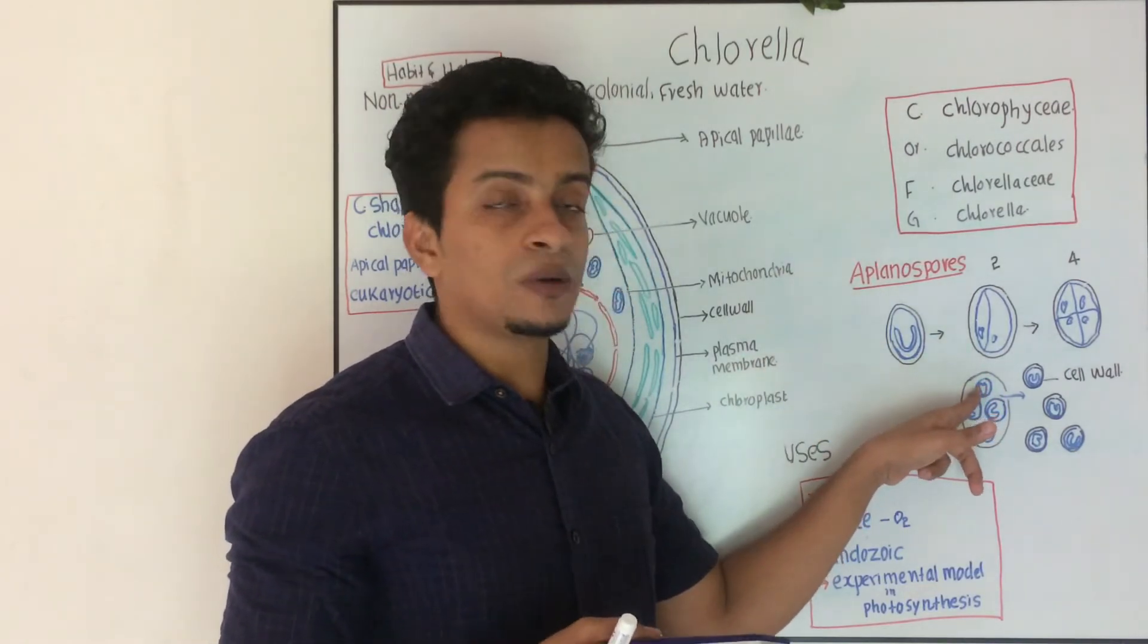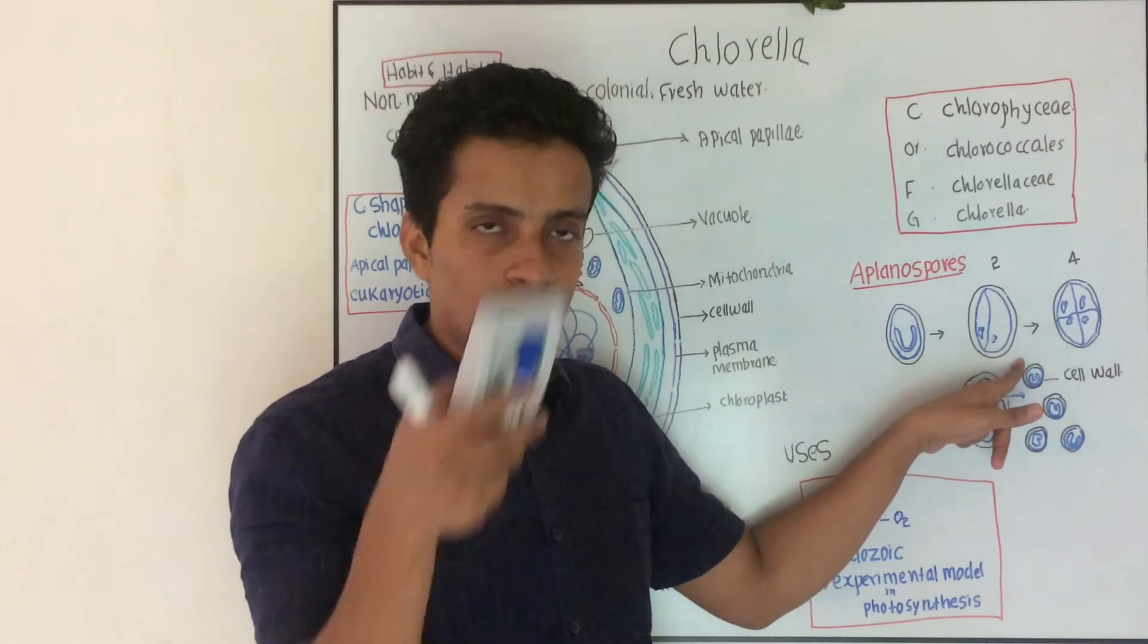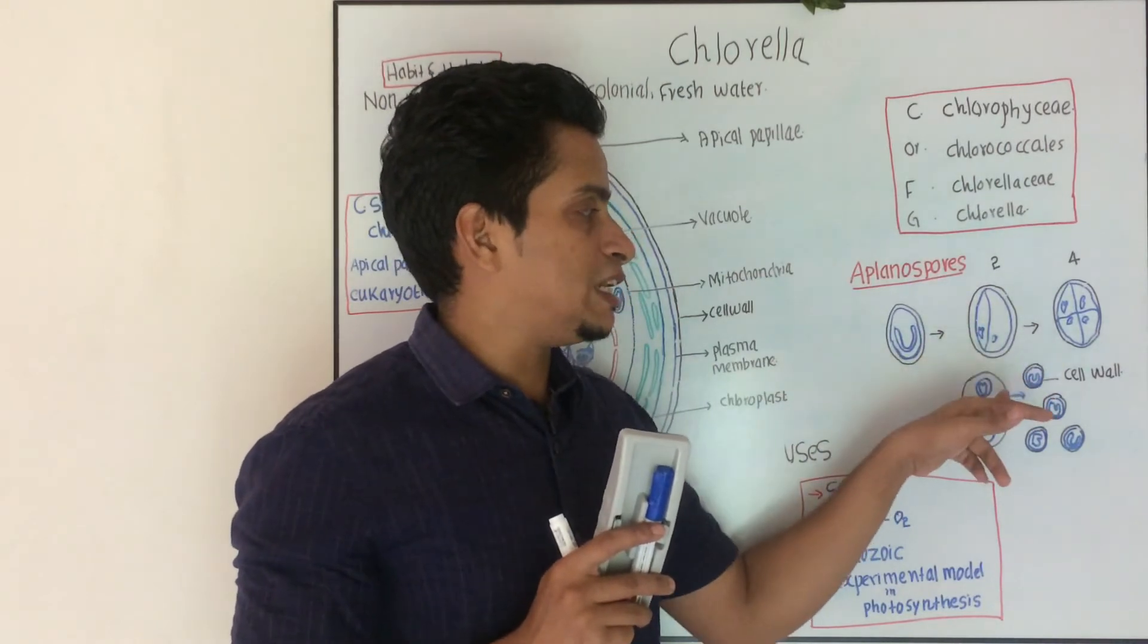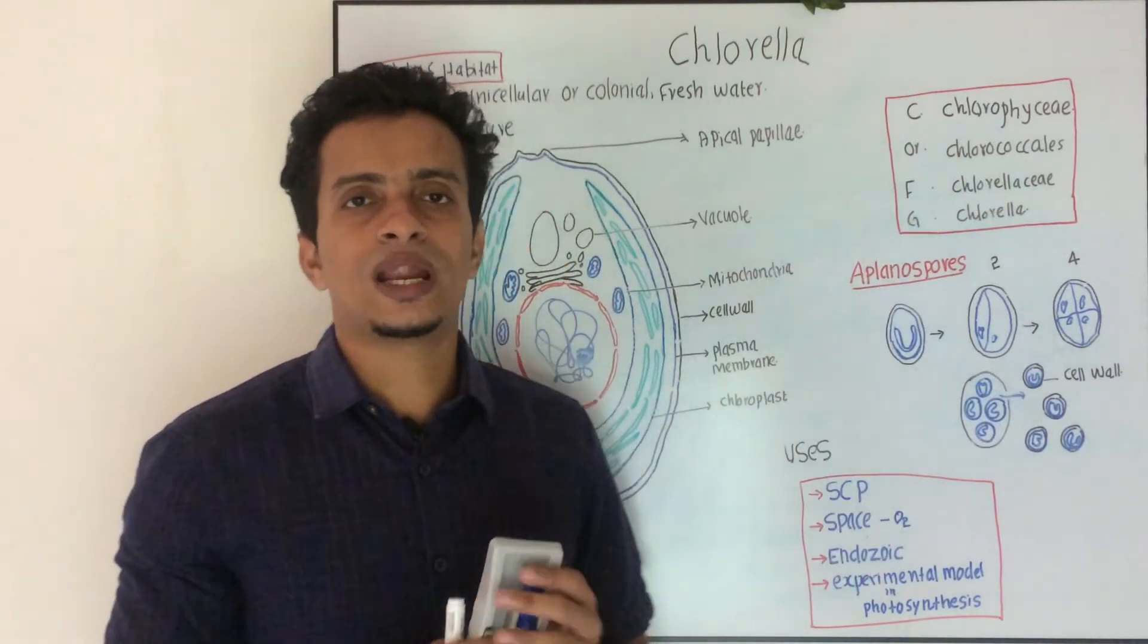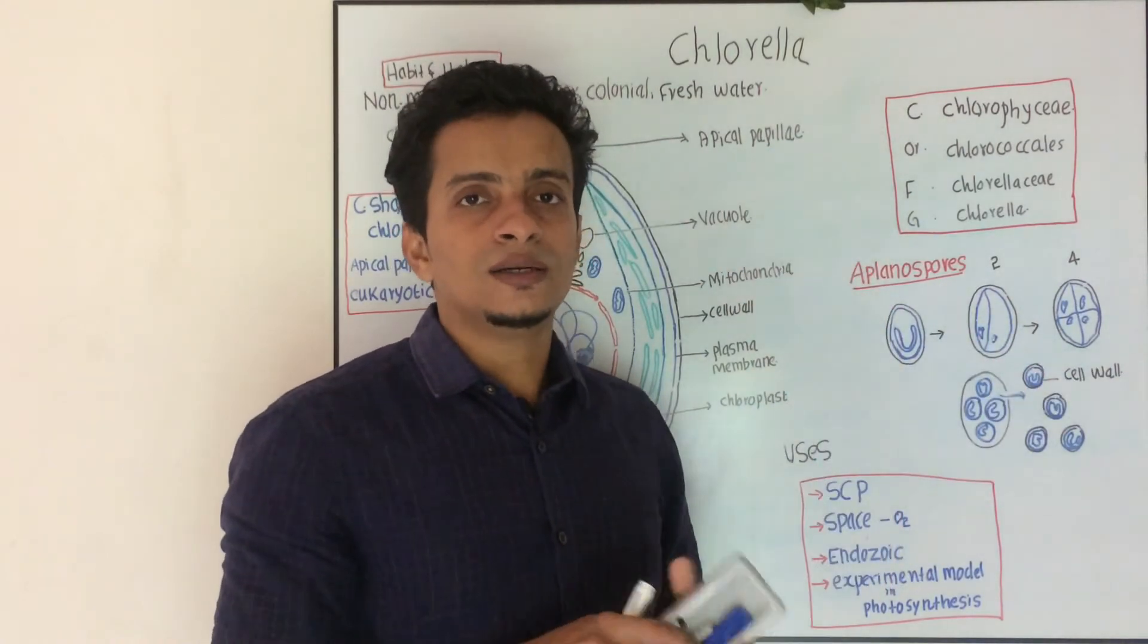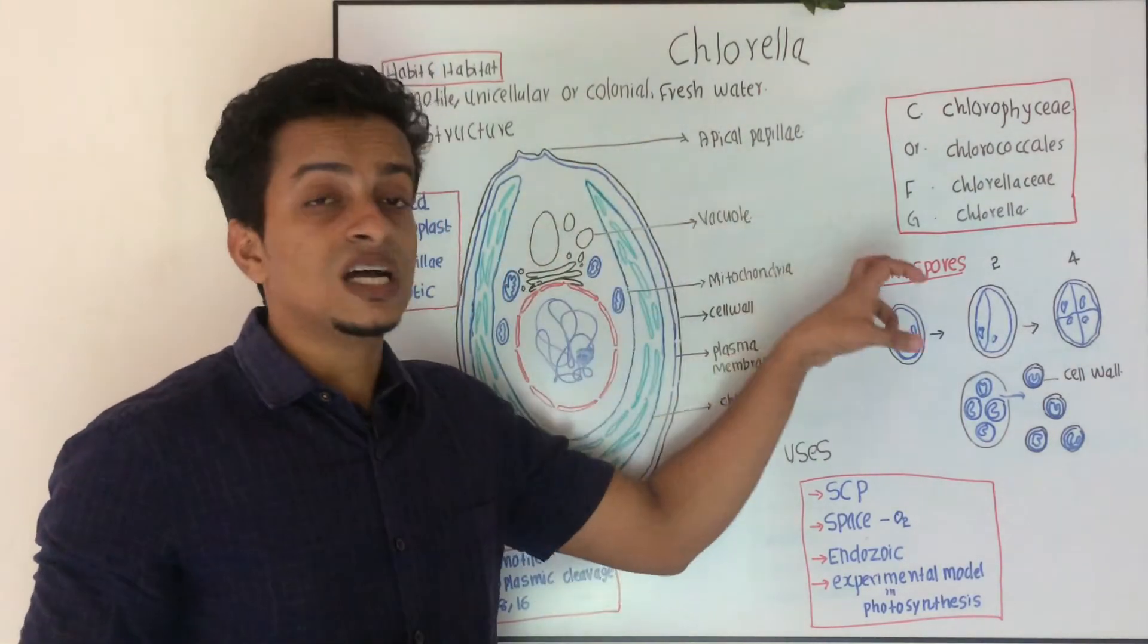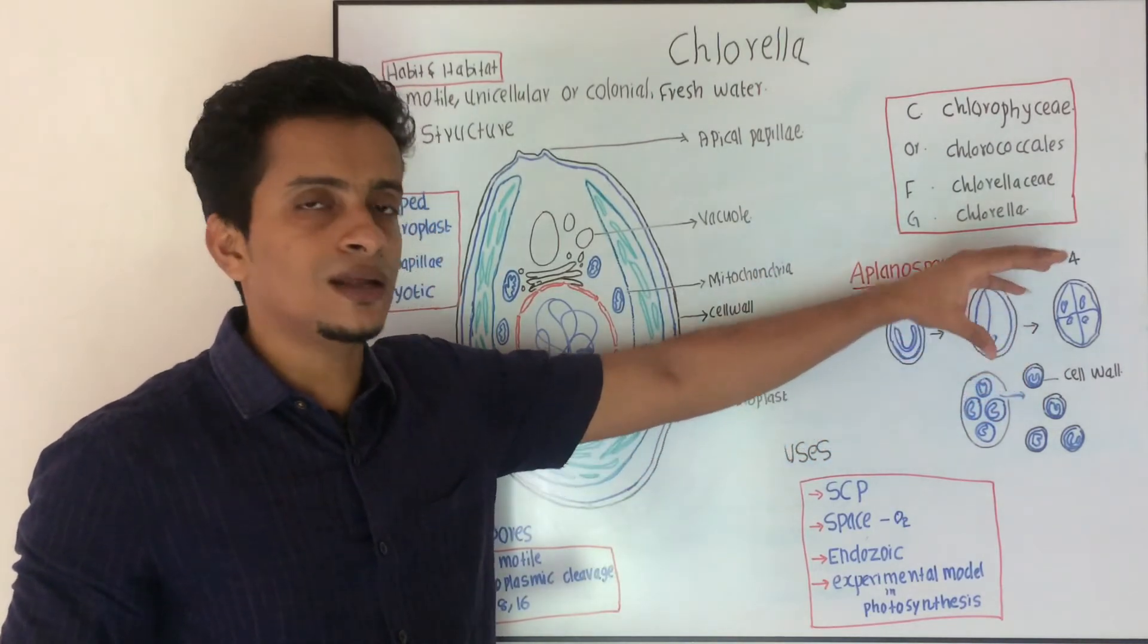Then, they will get a plasma membrane. Then, one cell wall, soon secreted. Plasma membrane, one cell wall, secreted. The only difference between aplanospore and parent cell is their size. Aplanospore is small size, when it germinates the larger size.